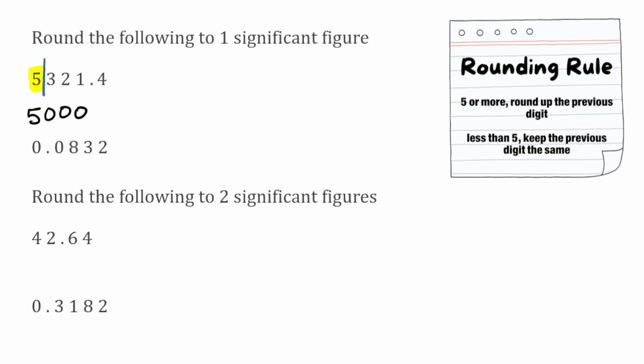We're rounding to one significant figure again for this next question. Our first significant figure would be the first digit that isn't a zero, which would actually be the eight. We draw a line between that eight and the next digit, which is a three. Because it's a three we're going to keep the previous digit the same, so the eight will remain as an eight. We copy the numbers on the left-hand side of the line — zero, point, zero — and the eight remained as an eight. So that number rounded to one significant figure would be 0.08.